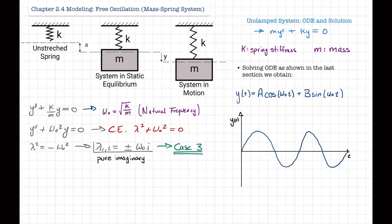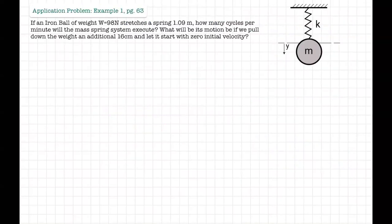Now let's solve an example problem. We have an iron ball that weighs 98 newtons and it stretches a spring 1.09 meters. The first question asks how many cycles per minute will the mass-spring system execute — they're asking for the natural frequency of the system.